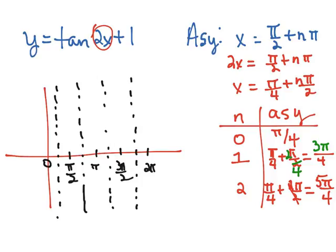And continuing out this same pattern, we would have an asymptote at 7π over 4. And so that's where our asymptotes for this particular graph fall.